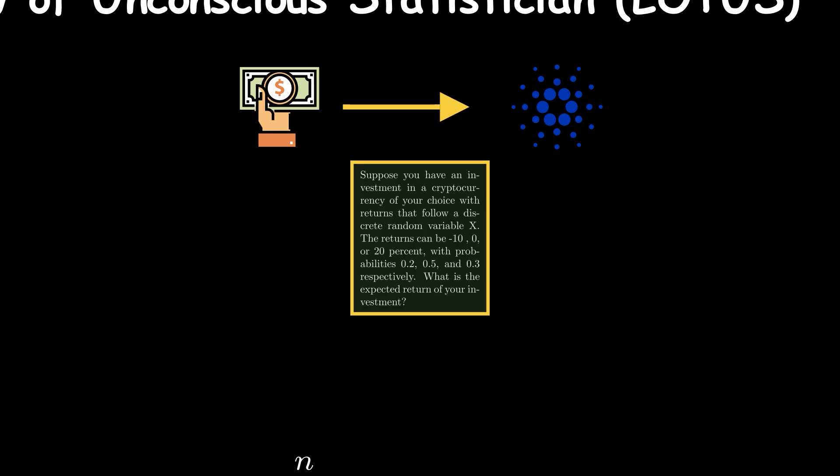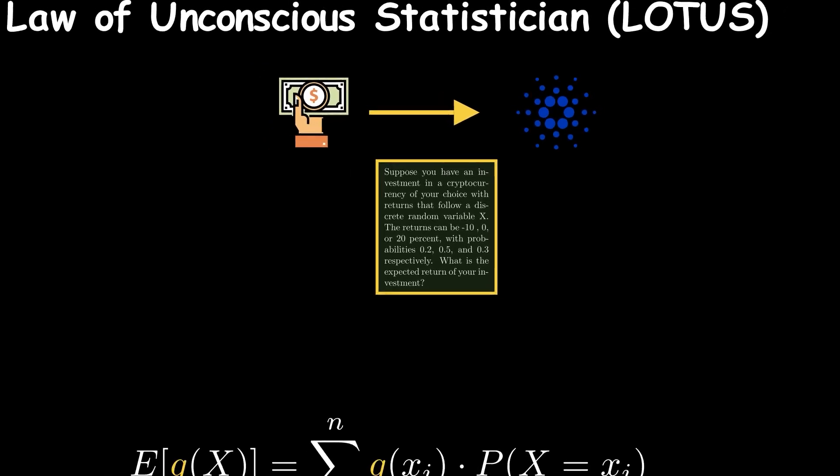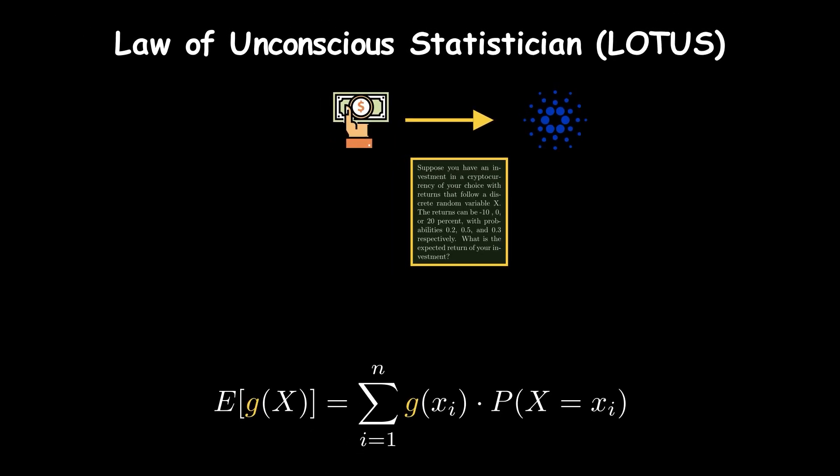Now you want to calculate the expected return of your investment if you invest $1000. Looking at the problem, we can see that the random variable X can take on the values -10%, 0%, and 20%. We are also given the probabilities for each value of X which are 0.2, 0.5, and 0.3 respectively.